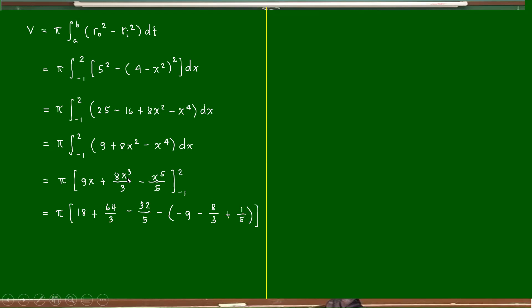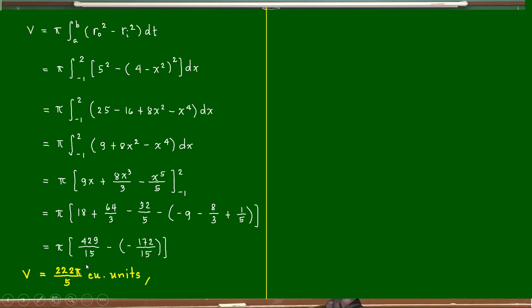Integrating gives pi times nine x plus eight x cubed over three minus x to the fifth over five, evaluated from negative one to two. Applying the upper limit gives 18 plus 64 over three minus 32 over five. Minus the value at x equals negative one: negative nine minus eight over three plus one fifth, which is negative 172 over 15. Combining gives 222 pi over five cubic units as the volume of the solid generated.